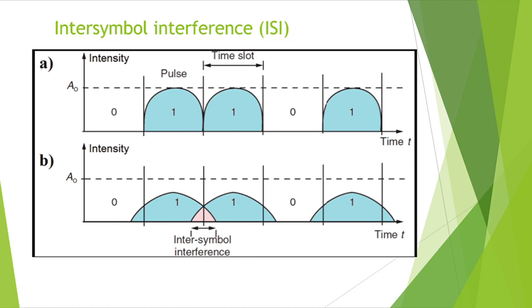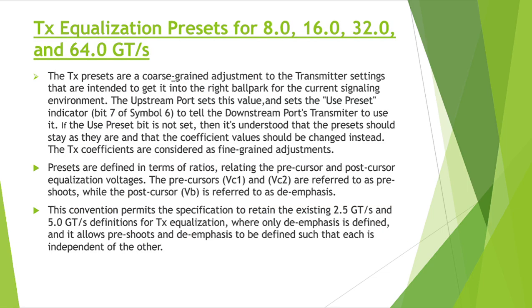In Gen1 and Gen2, the de-emphasis mechanism is used. De-emphasis means you are reducing the voltage — specifically by 1/3rd voltage — when transmitting through the link. When reducing the voltage, the signal degradation will reduce, because when the voltage level reduces, the frequency of the cross-talk will also reduce.